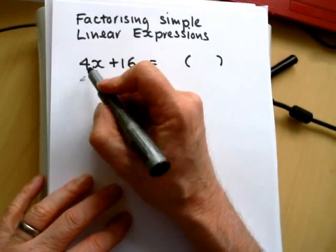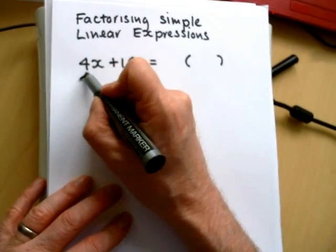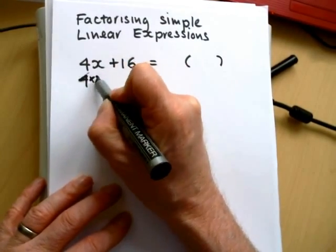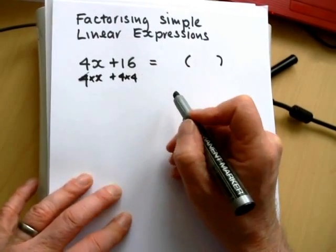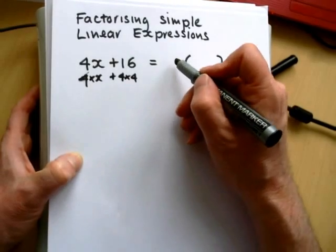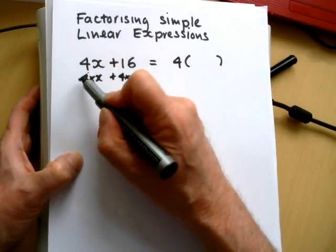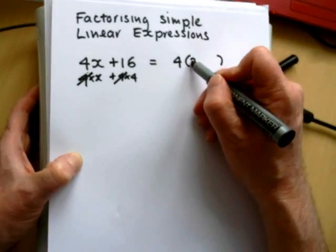So we could write, if we think of that as 4 times x plus 4 times 4. Now you don't need to write it out like this every single time, but it's just to help you see. So 4 is in both terms, so we can take that out. If you cross it off, then what you have left goes on the inside.